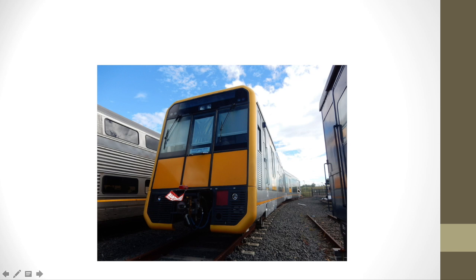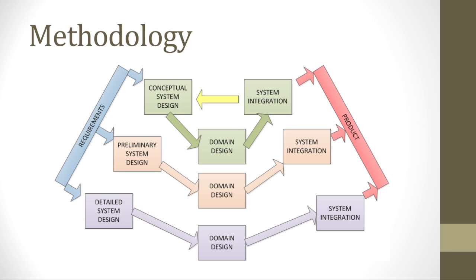Here we have two control trailer cars coupled together in the train yard to give an impression of the final concept design. Note that these haven't actually been constructed, but it does give an impression of a two-car Tangara. Moving forward, now that this system has been conceptually defined and systems have been designed, the next step is to continue the detailed system design and validation to create a final product.